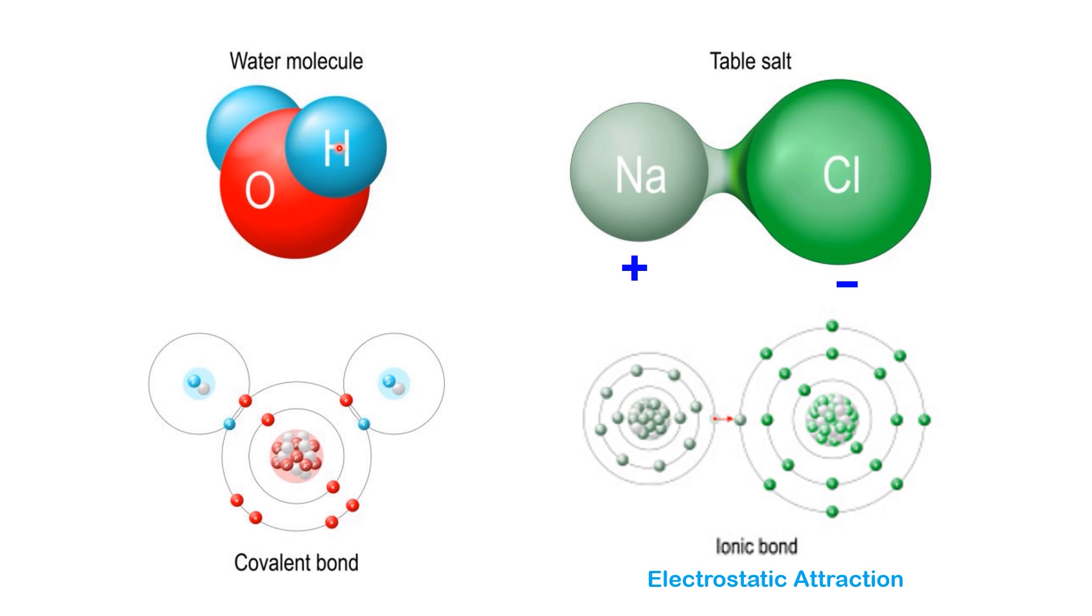Unlike ionic bonds, covalent bonds are directional, meaning the attraction occurs along the specific region where the electrons are shared between the two atoms. In short, ionic bonds involve electron transfer and charge attraction, while covalent bonds involve electron sharing between neutral atoms.